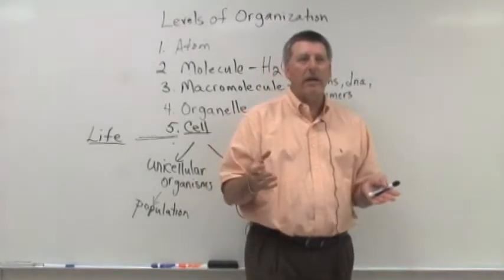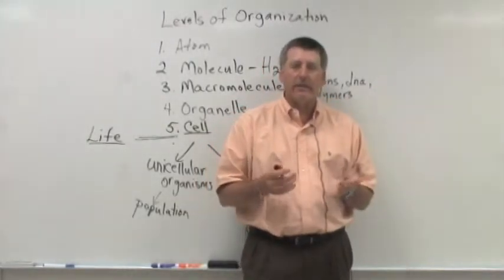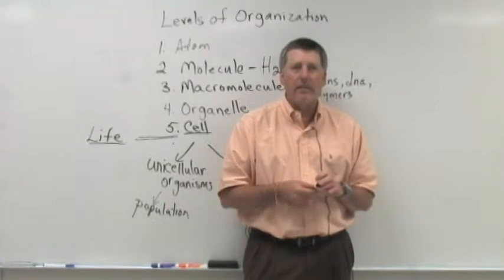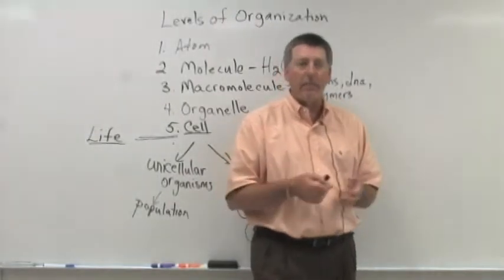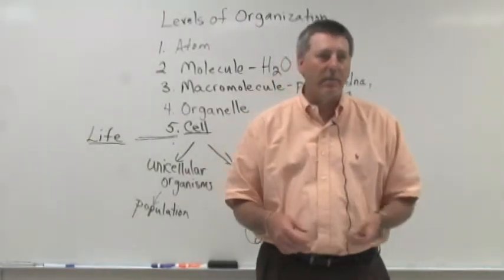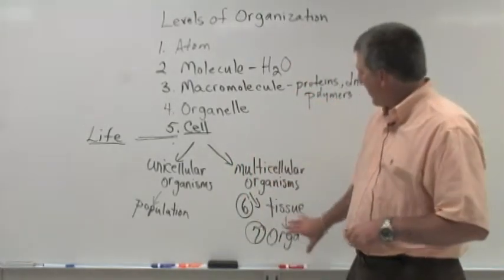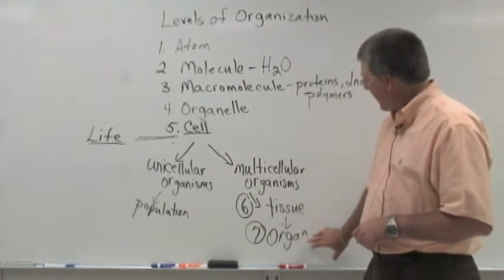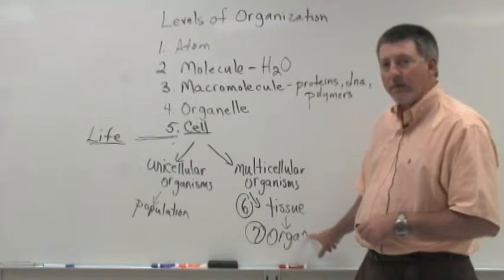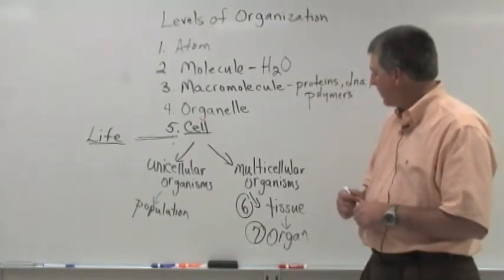Or we could have complicated organs like the small intestine. The small intestine is lined with something called simple columnar epithelium and then there's some loose connective tissue and some smooth muscle. So we have all sorts of different kinds of tissues in some organs. Some organs are much more simple.